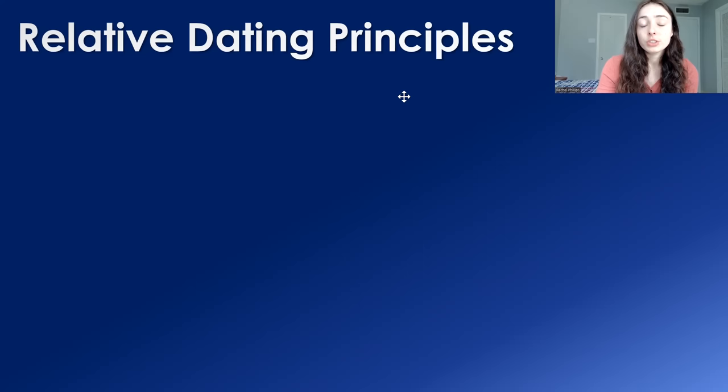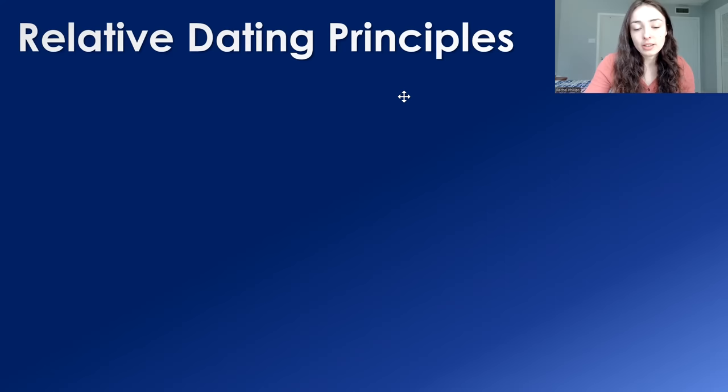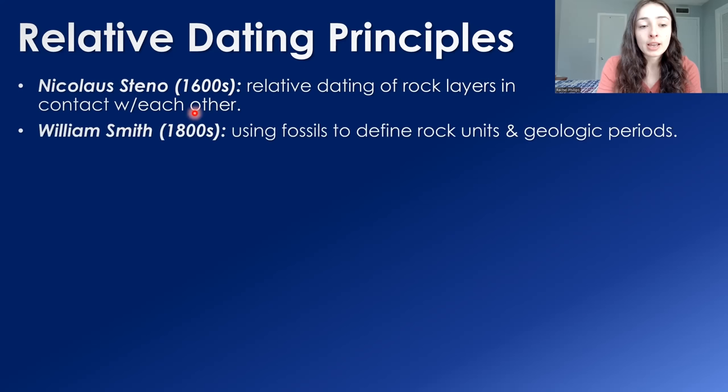Now let's talk about relative dating principles. Some major figures who had a hand in creating these principles are Nicholas Steno and William Smith, as well as James Hutton and George Cuvier, who all came together with their independent lines of work to develop these principles of relative dating over centuries.